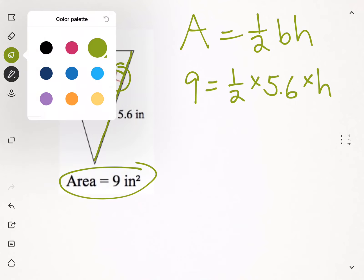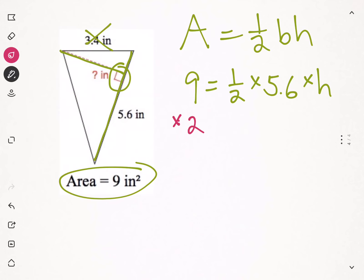Step 1, multiply both sides by 2. Times 2. Times 2. We get 18 equals. Now, instead of half, 5.6 times h, we just get 5.6 times h, because we multiplied by 2.